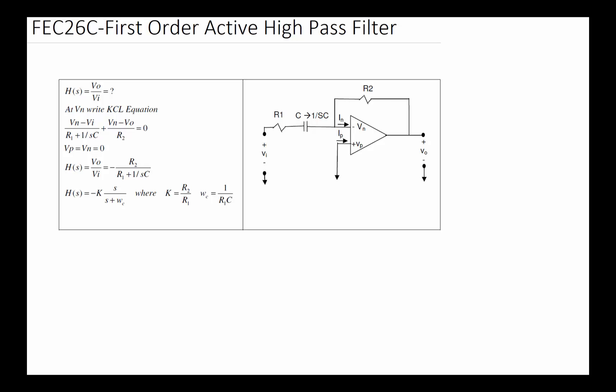In this video we're going to review a circuit that can be used to build a first-order active high-pass filter. At the center of this design is an op-amp, and we're going to assume ideal op-amp and the three assumptions that go with ideal op-amp in this particular design.